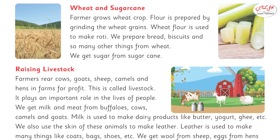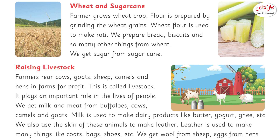Wheat and sugarcane. Farmers grow wheat crops. Flour is prepared by grinding the wheat grains. Wheat flour is used to make roti. We prepare bread, biscuits, and so many other things from wheat. We get sugar from sugarcane.